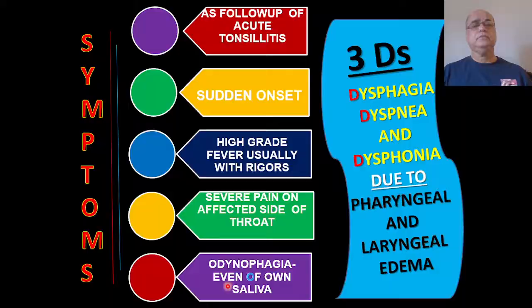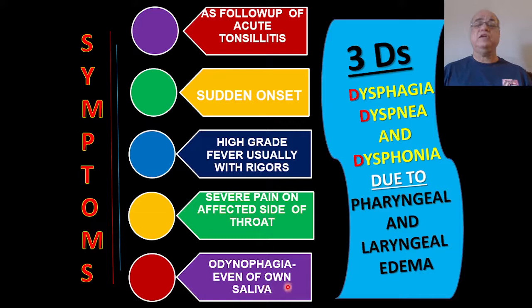Symptoms: there is usually a history of acute tonsillitis. Onset is sudden, with high-grade fever usually with rigors, and severe pain on the affected side of the throat — unilateral pain is more marked. Odynophagia is so severe that the patient would be unable to swallow his own saliva. To memorize: the three D's — dysphagia, dyspnea, and dysphonia due to pharyngeal and laryngeal edema — are the predominant symptoms.